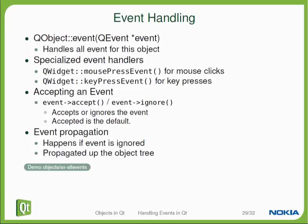Once you receive an event, there are two things that can happen. The event can be accepted, meaning your widget takes the event and declares that it handles it. The event can also be ignored, meaning you are rejecting to handle the event. In that case, event propagation takes place — the event is delivered to your parent object, not to the base class. That's an important difference. The parent object can then decide to handle this event or not.